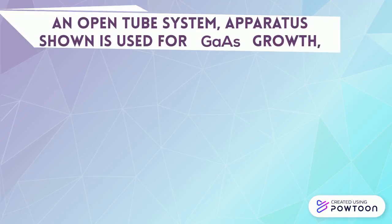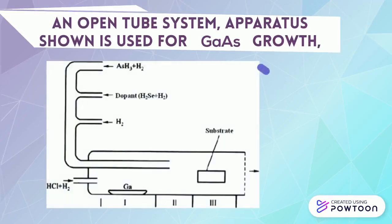An open tube system apparatus is used for gallium arsenide growth. As you can see above, the left side shows the dopants, the right side is the substrate, and the far right side is the product.